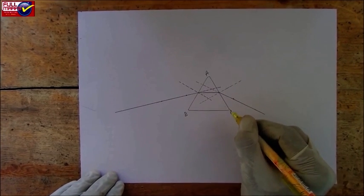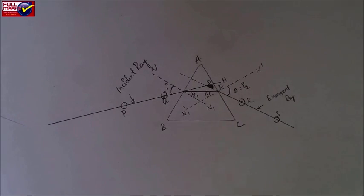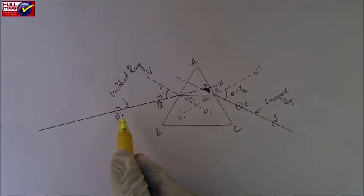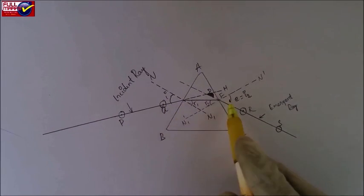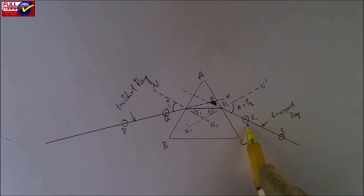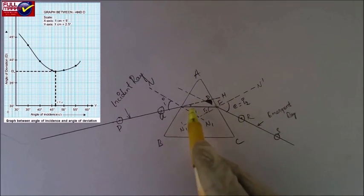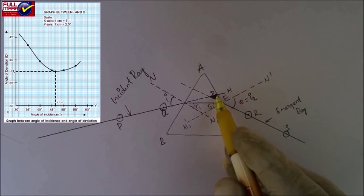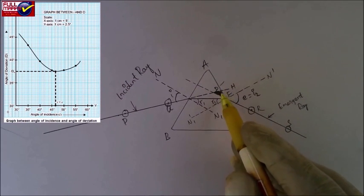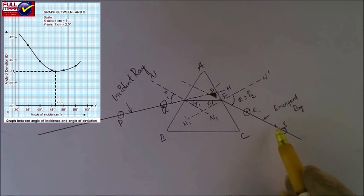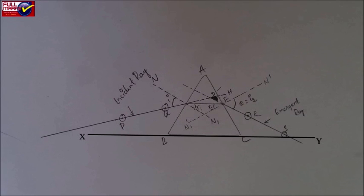Similarly, find angle of deviation for different values of i. Plot a graph for angle i versus d. The lowest value of angle of deviation on graph gives the value of dm. Measure angle BAC in the boundary of the prism. This is angle of prism A.